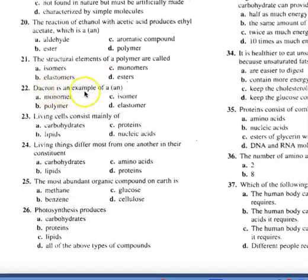Number 22. Dacron is an example of a polymer. So 22 is B. Living cells consist most mainly of what material? Proteins. Living cells contain more proteins than any other material. So 23 is C. Living things differ most from one another in their constituents also of proteins. Proteins, the way your skin is, the texture of your hair, all those are different kinds of proteins that different persons have, and that makes for the uniqueness that we see in people.